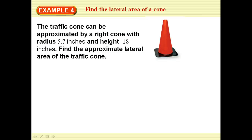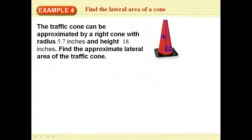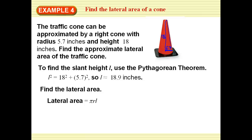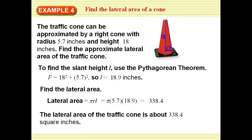To find the lateral area of a traffic cone, which can be approximated by a right cone with a radius of 5.7 and a height of 18: I find the slant height using the Pythagorean Theorem, which comes out to be about 18.9 inches. The lateral area is pi r l, so pi times 5.7 times 18.9, giving approximately 338.4 square inches.